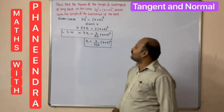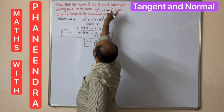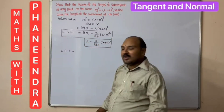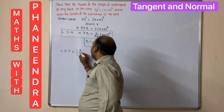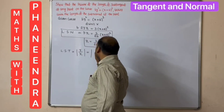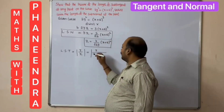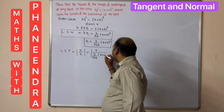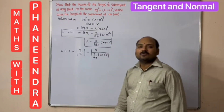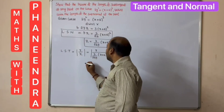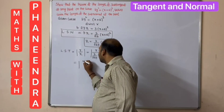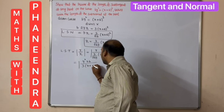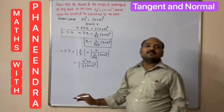The formula for length of subtangent (LSD) is y / y₁. Substituting y₁ = 3(x + a)² / (2y): LSD = y ÷ [3(x + a)² / (2y)]. The denominator becomes the numerator, giving LSD = 2b · y² / [3(x + a)²]. This is the length of subtangent.